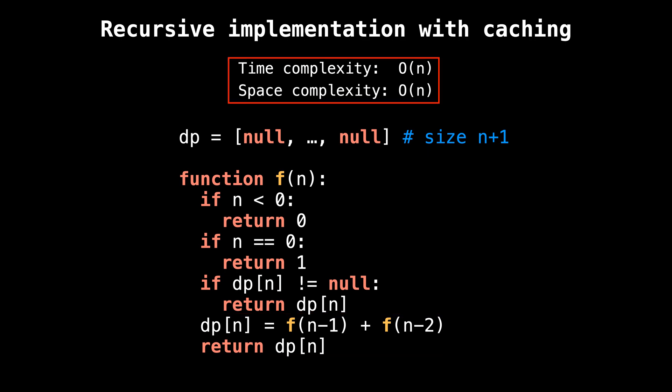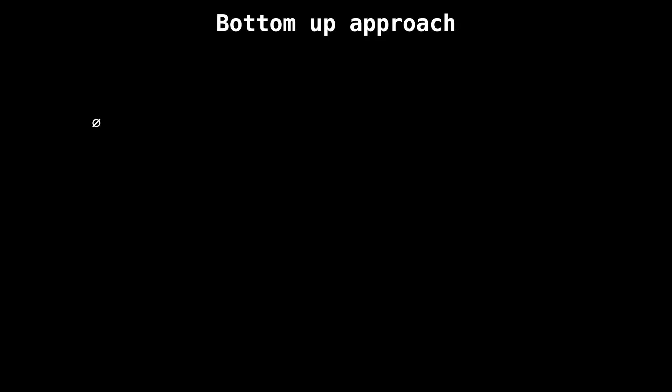In terms of time and space complexity, they're both linear in terms of n. The space complexity is linear because we use n memory for the cache but also n memory for the recursion stack frames because our recursion can go as deep as n. The time complexity is also linear because with this caching mechanism, we have eliminated the exponential branching factor we had previously. Awesome.